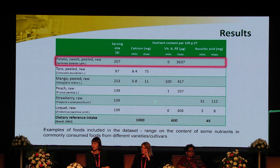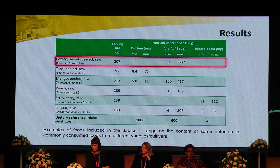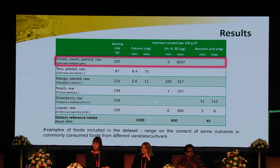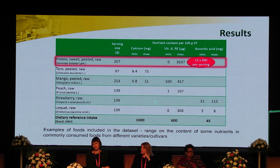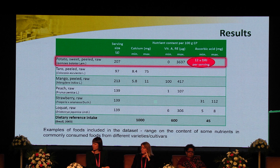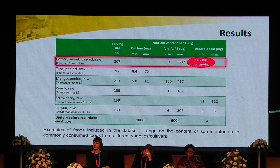If we take sweet potato as an example, we can see that the vitamin A content per 100 grams shows a very wide range. We can have varieties with no vitamin A, and varieties with more than 3,600 micrograms. If we consider that the average serving size consumed for this food is 207 grams, consuming one serving could provide 12 times the dietary reference intake in one day — so it's zero against 12 times the DRI.